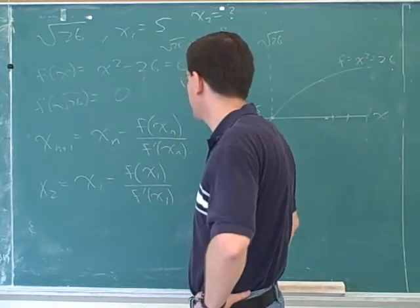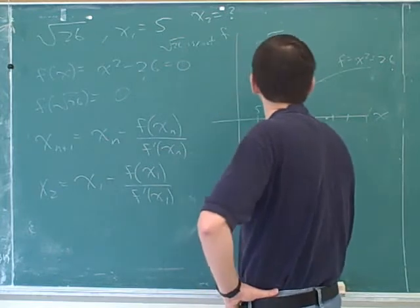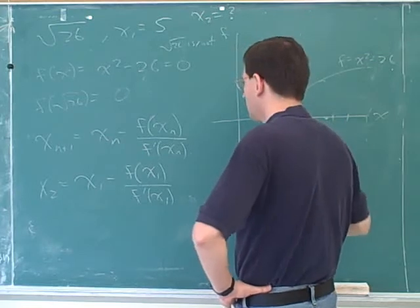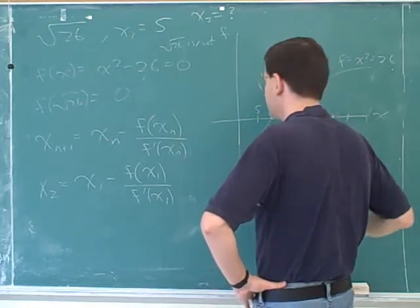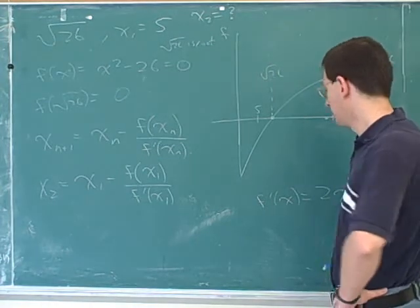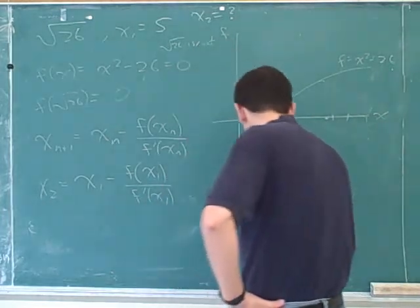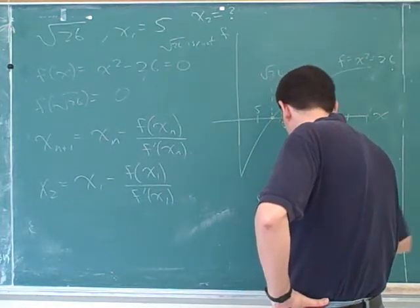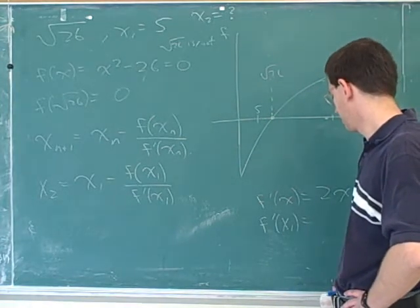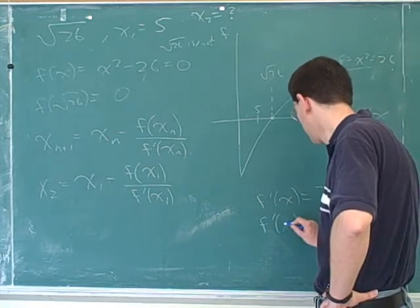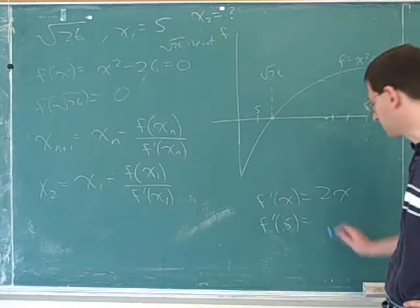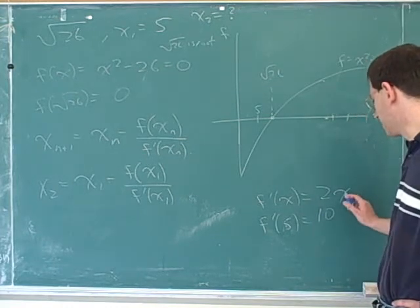Alright, so you can see that to use Newton's method, you're going to have to find the first derivative. So what is the first derivative of our function here? 2x. Right. Now we have to figure out what that first derivative is going to be at x1. But our x1 here, what do we plug in for x1? 5. Right. So what will the first derivative be? 10. That's right. Plugging in 5 over here, we get 10.